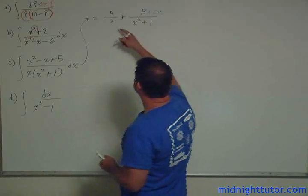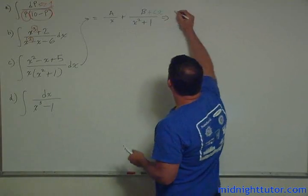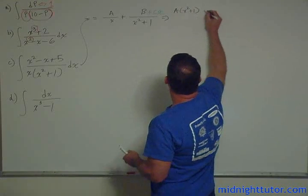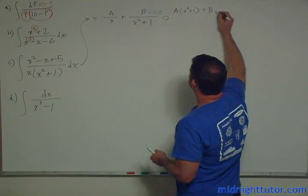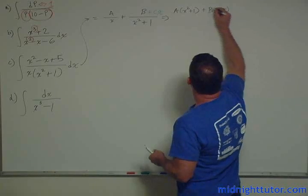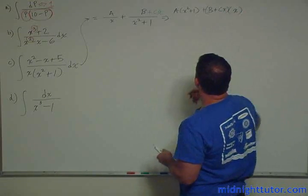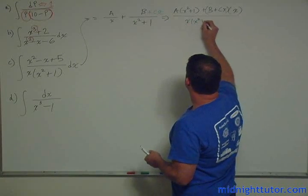And so now we're going to cross multiply. And this then becomes A times x squared plus 1 plus Bx plus Cx times x all over x times x squared plus 1.